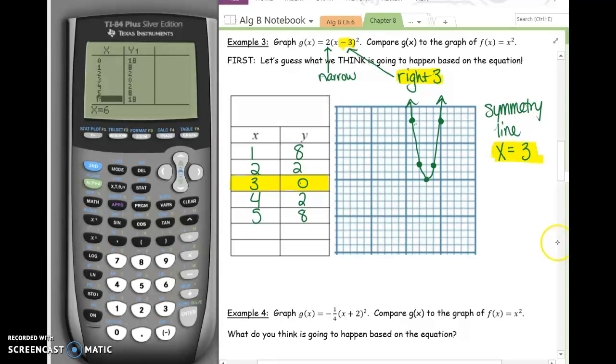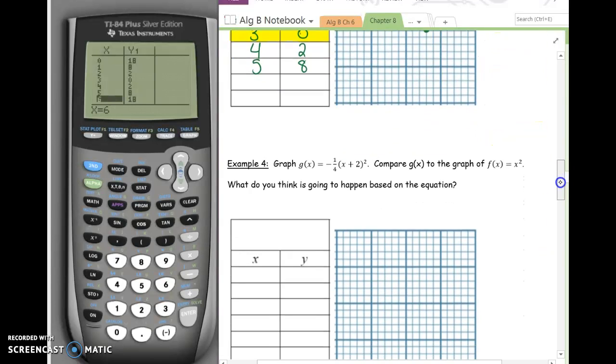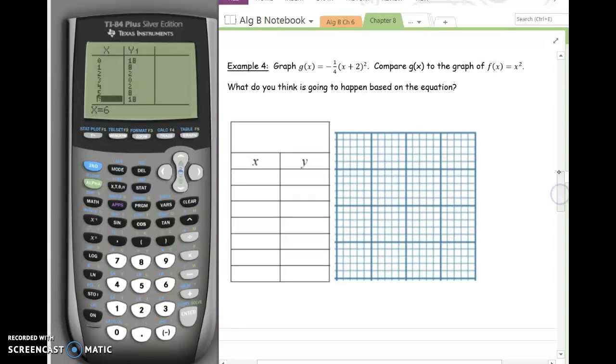And then, a couple things to think about. What is negative 1 fourth going to do to your graph? What is the plus 2 going to do to your graph? See if you can guess. Write it down. Then graph it. Don't forget to write down where your symmetry line is. So after you've graphed it on your calculator, write down where the symmetry line is. Because that helps you with where do you need to go on the table.